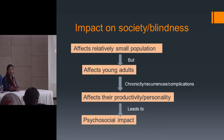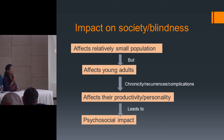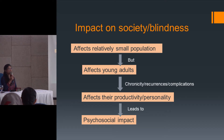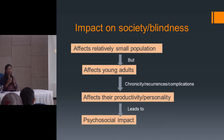Because uveitis contributes less to overall blindness statistics, if you ask for a grant for a uveitis study, grants are usually rejected because it is not considered a public health issue. People are more interested in public health issues like diabetic retinopathy and ARMD. If you ask for grants for those researches, you are immediately given funding. We need to make people aware that uveitis blindness occurs in the younger generation, not in old age.